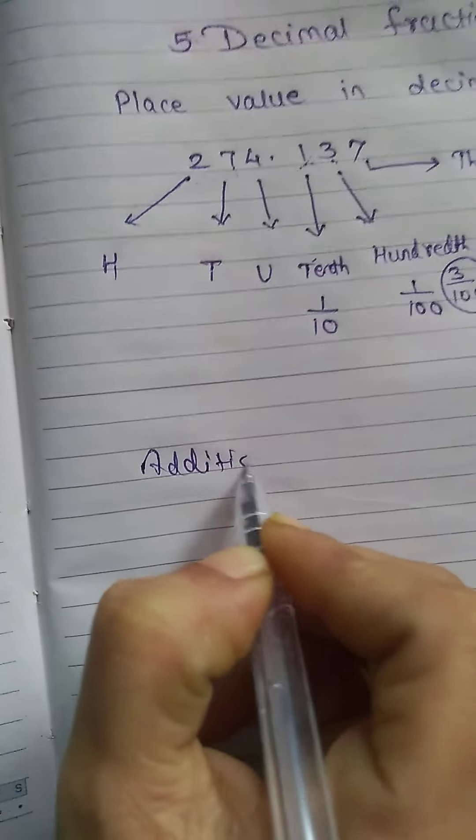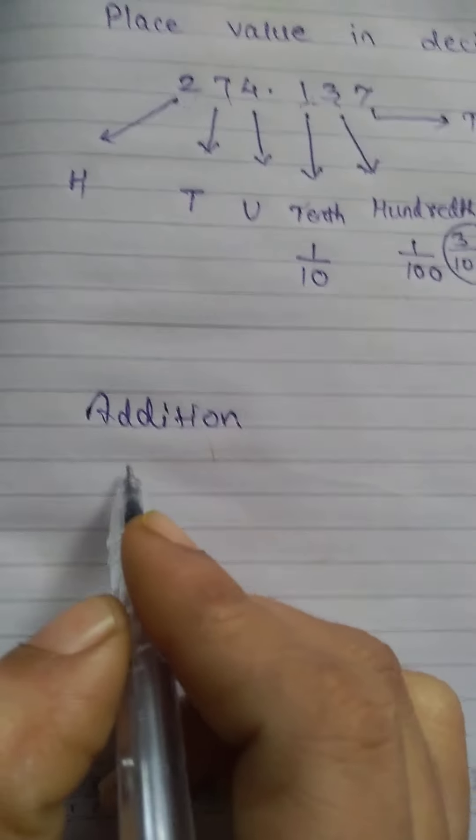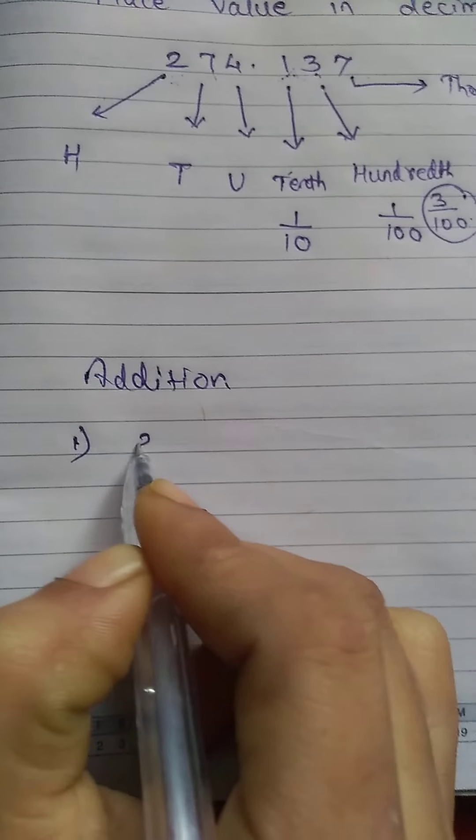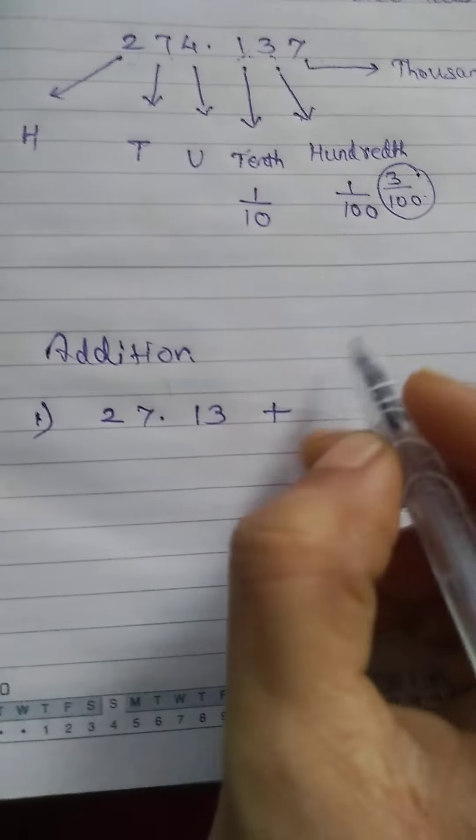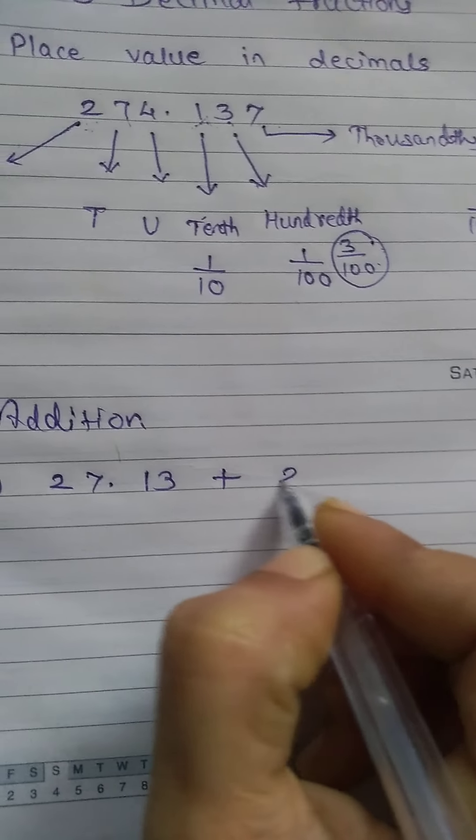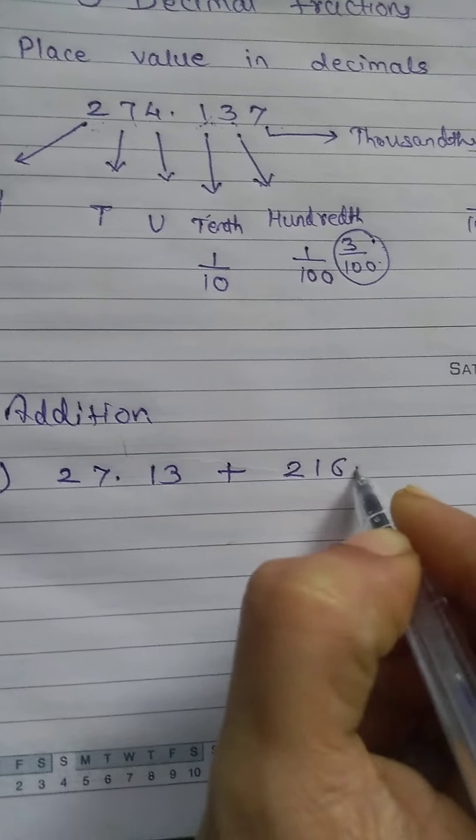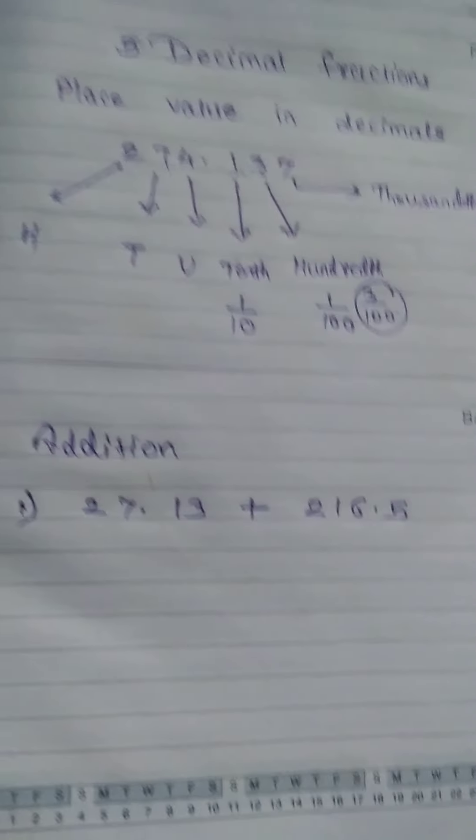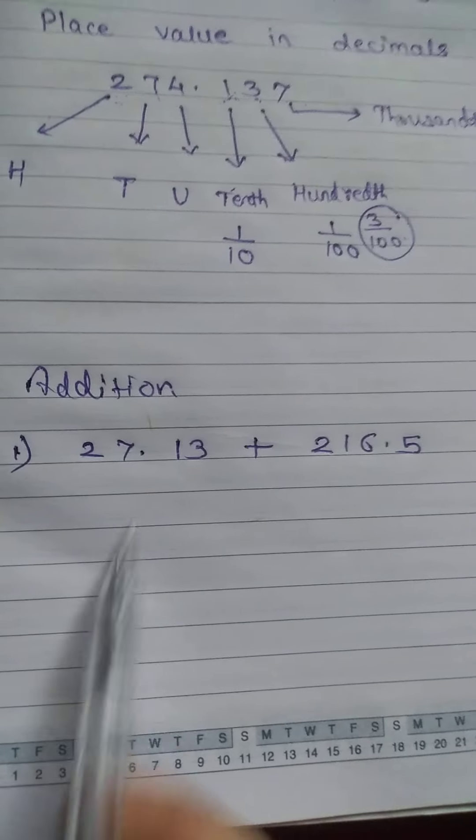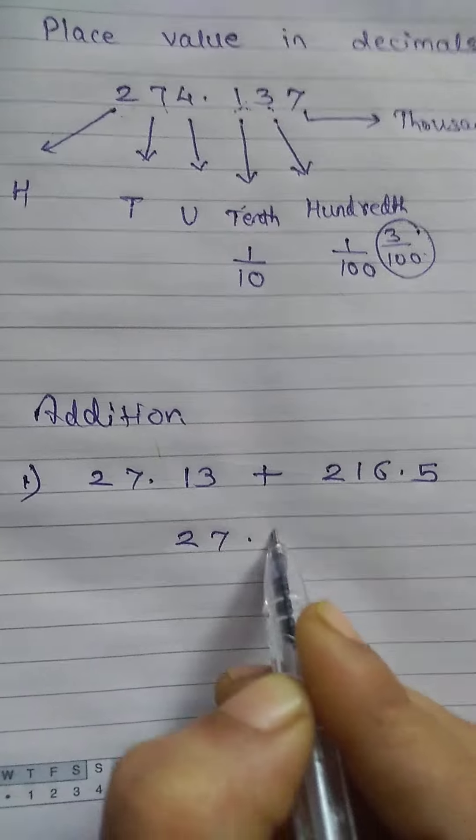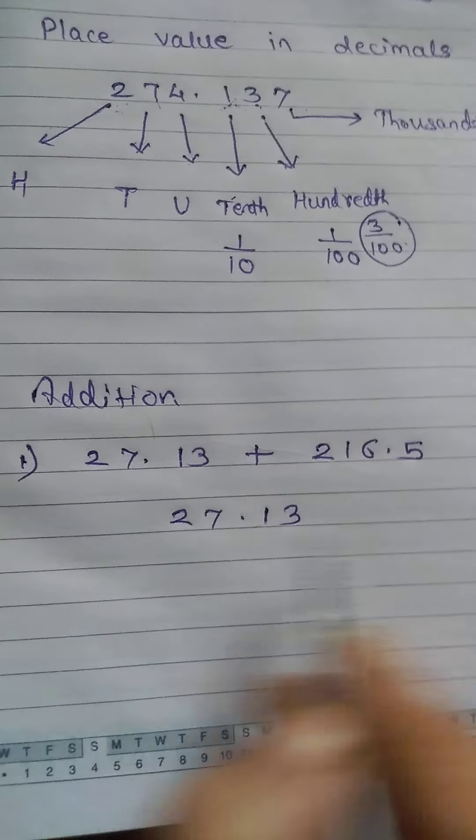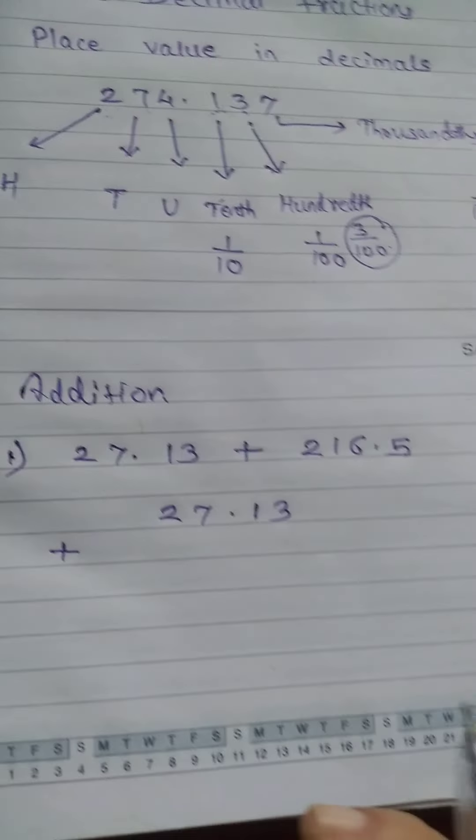In this I will give you one example. Suppose now one example is given as 27.13 plus 216.5. So now first you have to arrange this in vertical order. How to arrange? You have to write this number 27.13. You can write it neatly. Plus - I'm writing a little bit far.